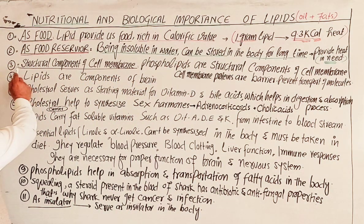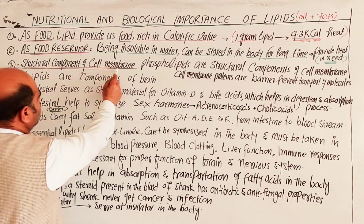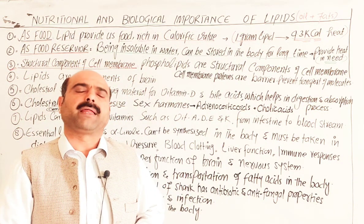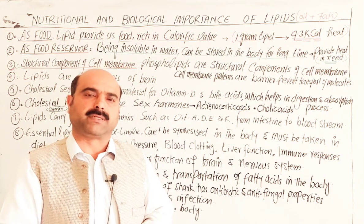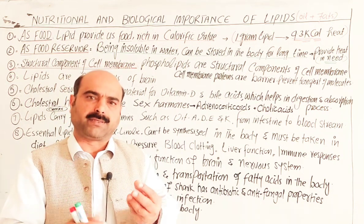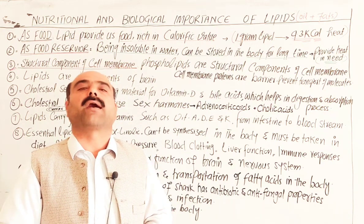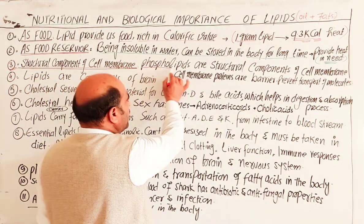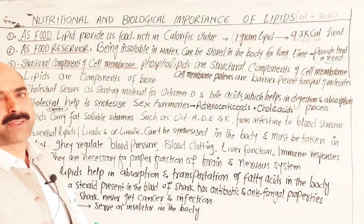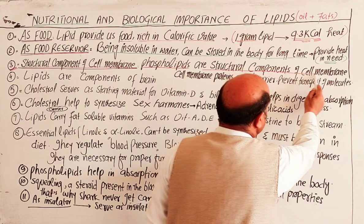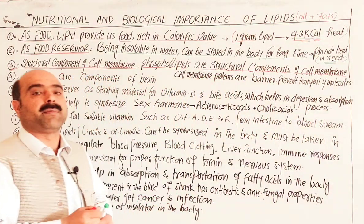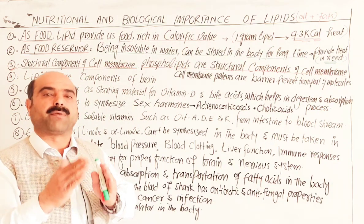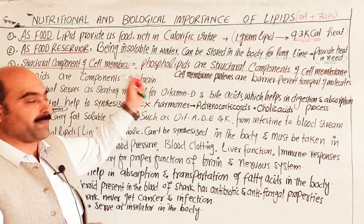Third: lipids are used as structural components of the cell membrane. The cell membrane acts as a cover that protects the delicate organelles inside the cell. Phospholipids, which are a type of complex or compound lipid, are the structural components of the cell membrane — they are the structural units that make up the cell membrane.